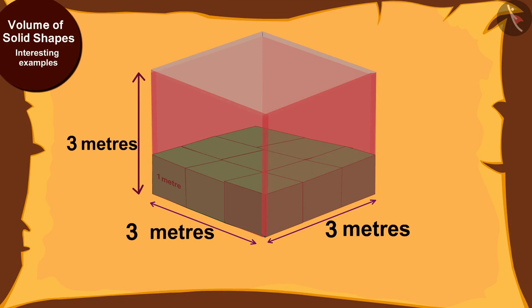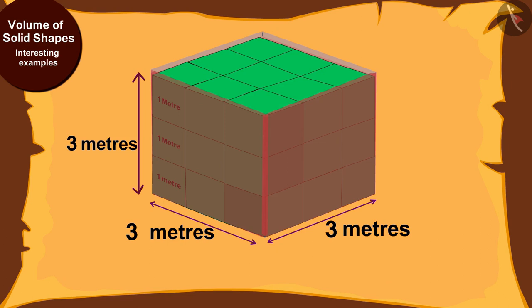In other words, a cube shaped house will have 3 layers made up of cubic meters. The volume of each layer is equal to 9 meters cubed.